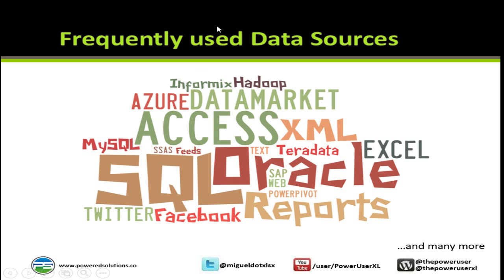Here you can see some frequently used data sources — all the data sources we could possibly use with PowerPivot: Informix, Access, SQL, MySQL, Oracle, SAP, PowerPivot on the web, Twitter, Facebook reports, SQL Server Reporting Services reports, Excel itself, text, feeds, XML — you name it. We can get data from those sources using either Data Explorer or the familiar PowerPivot we all know.